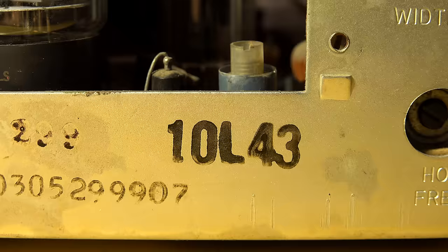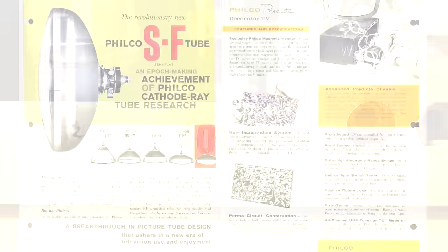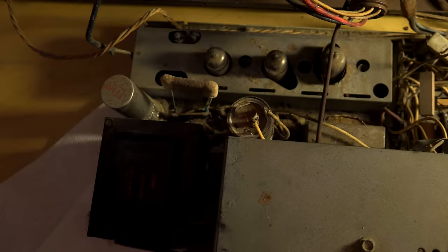Here's what it looks like when you undo the bolts and take the chassis out of the TV. Here's the chassis number 10043, and this is what I used to find all documentation on this television.